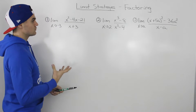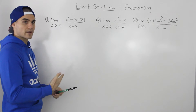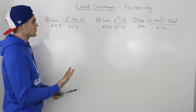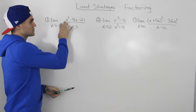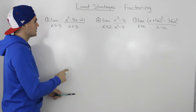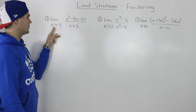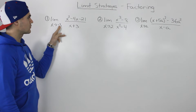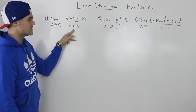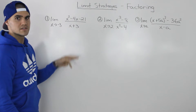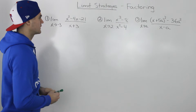The first thing you always want to check with limits is if you can make a direct substitution. Because if you can do that, all you have to do is get that y value and that's what the limit is equal to. But notice in this case, if we plug in negative 3 for x, the denominator would be 0, so we can't do that because the function is undefined at that point.